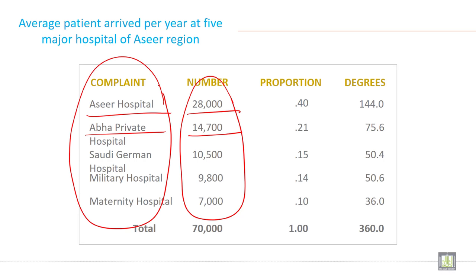So what do you need to draw a pie chart? You need relative frequency. This relative frequency is also called proportion. So you just need to calculate the relative frequency for each class.